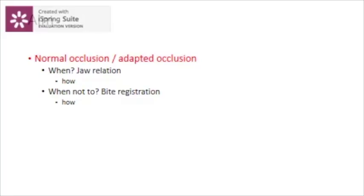Ideally, clinicians attempt to provide ideal occlusion for everyone, but this is not always possible due to various technicalities, extensivity of restorations, invasiveness, and the diverse nature of adaptation in each individual. It is judicious to choose which patients need ideal occlusion and which patients need adapted occlusion. The remaining part of the presentation deals with when to establish a new jaw relation and how, and when to stick with the adapted occlusion and how to do that.